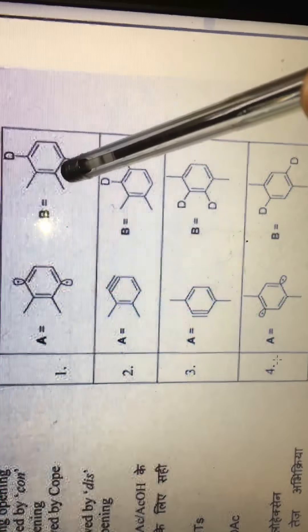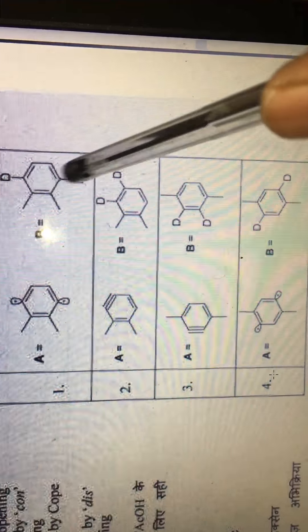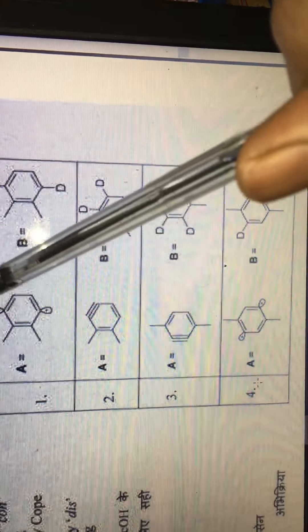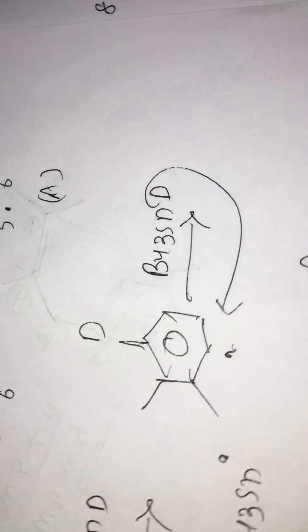And in option number B we have deuterium attack at one and four. So option number one is correct answer for this. So this is very simple reaction. This is the Bergman cyclization.